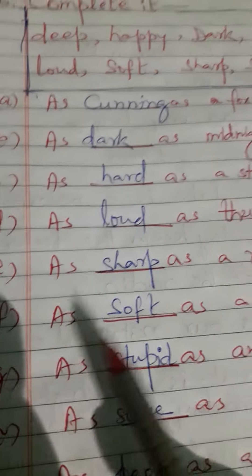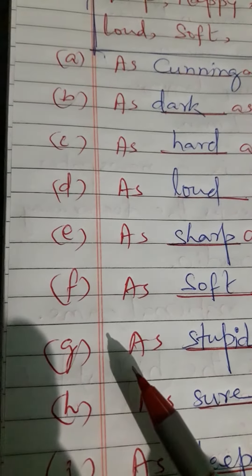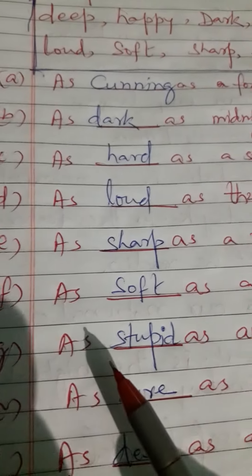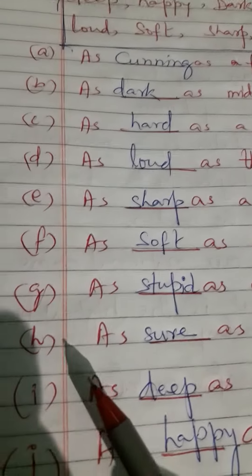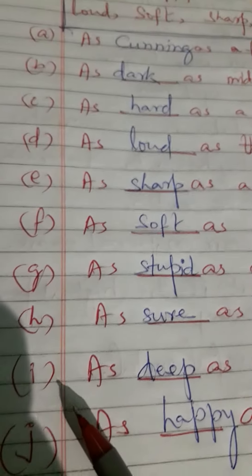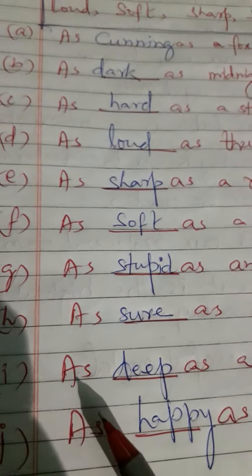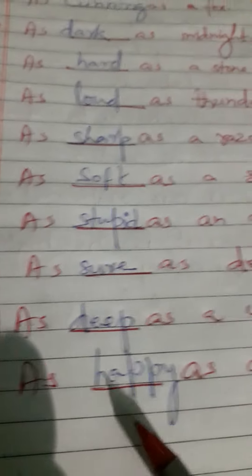F: As soft as silk. G: As stupid as an ass. H: As sure as death. I: As deep as a well. J: As happy as a king.